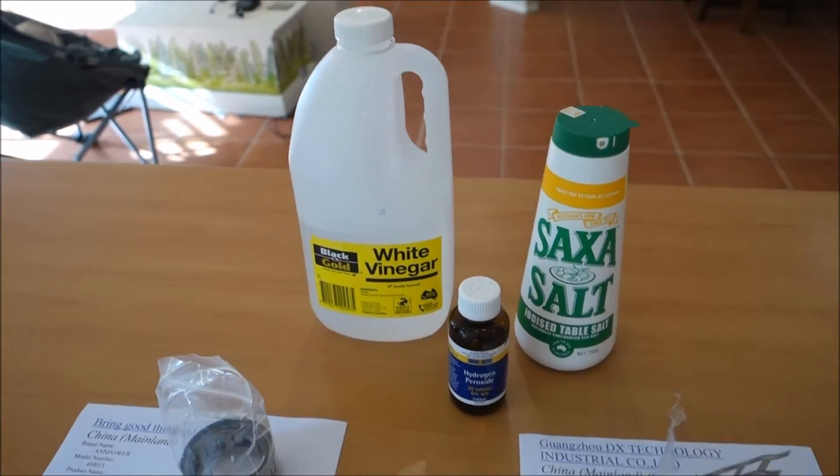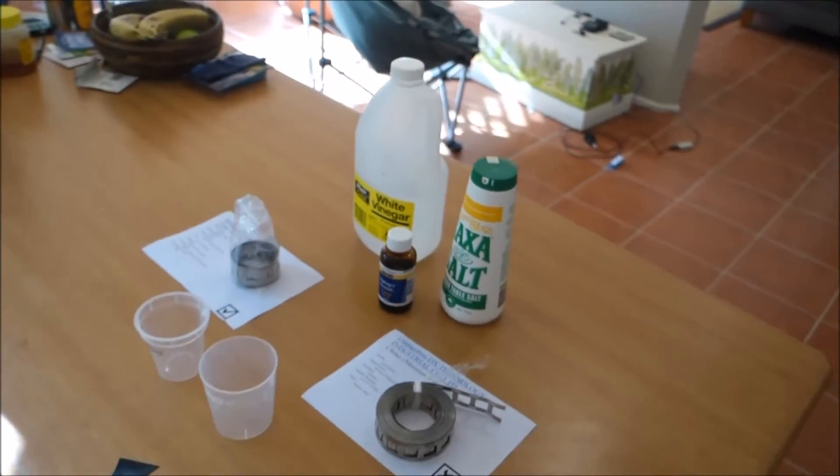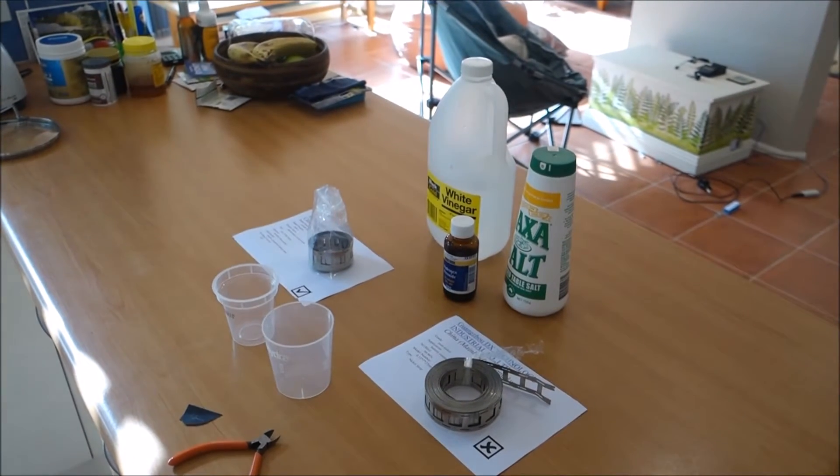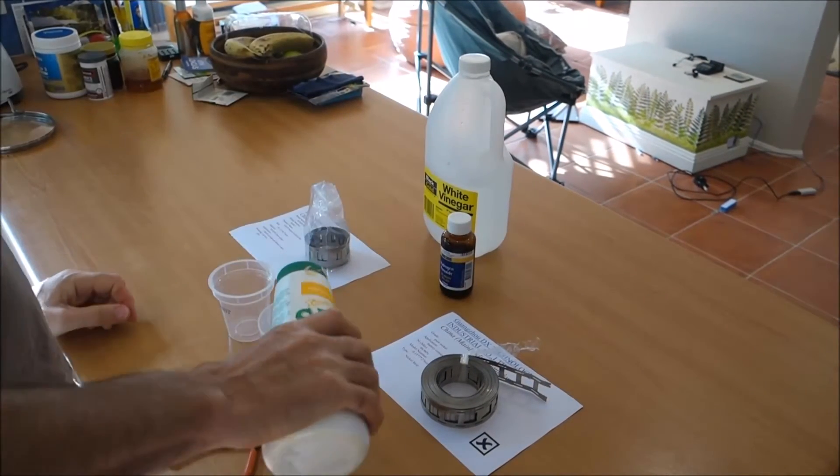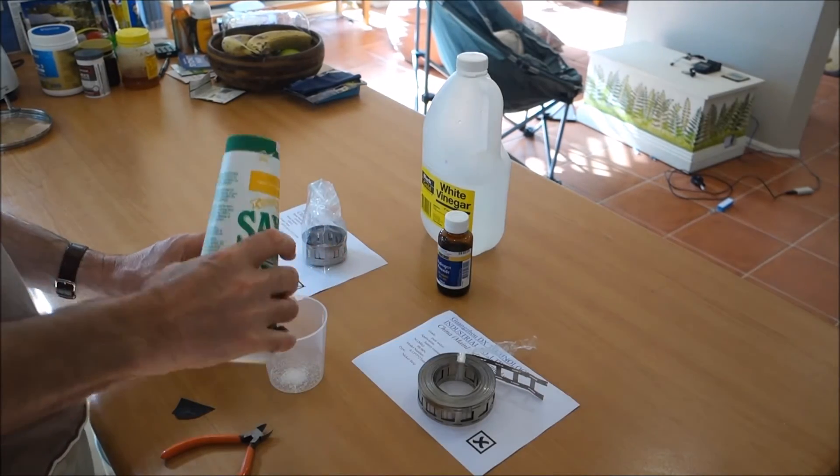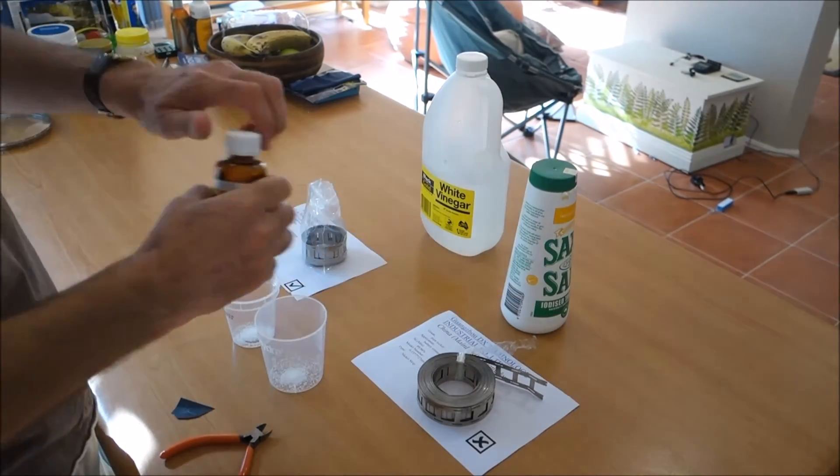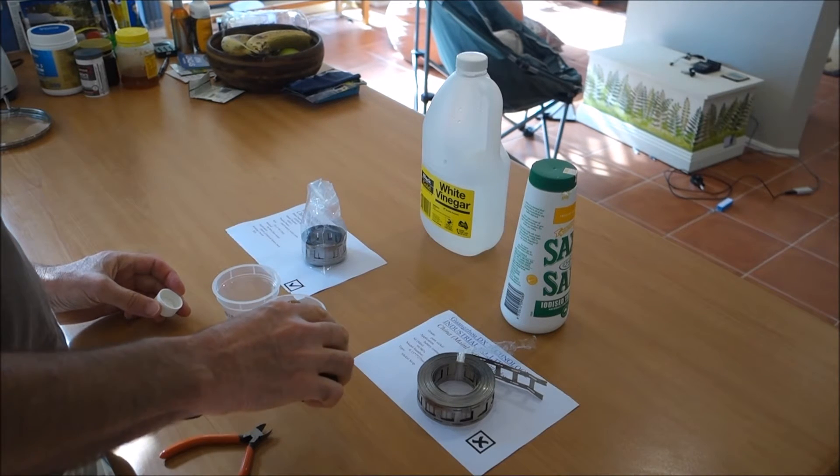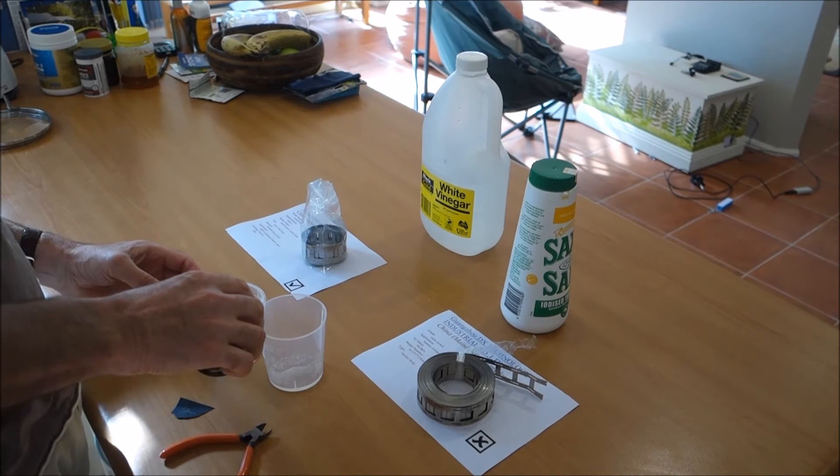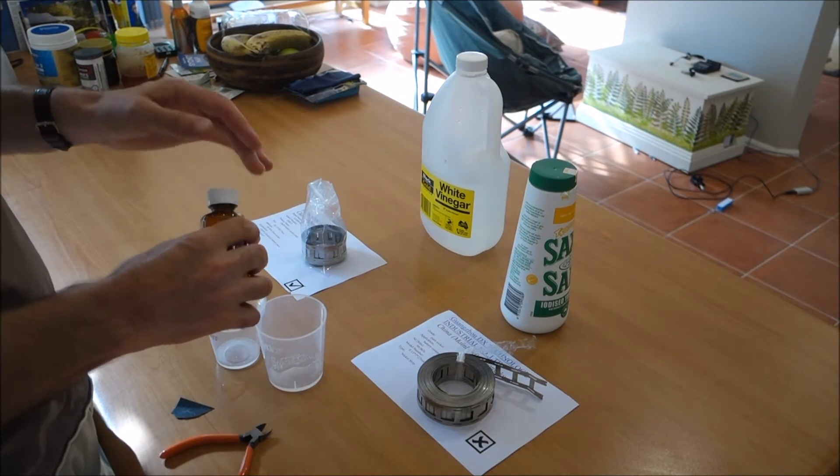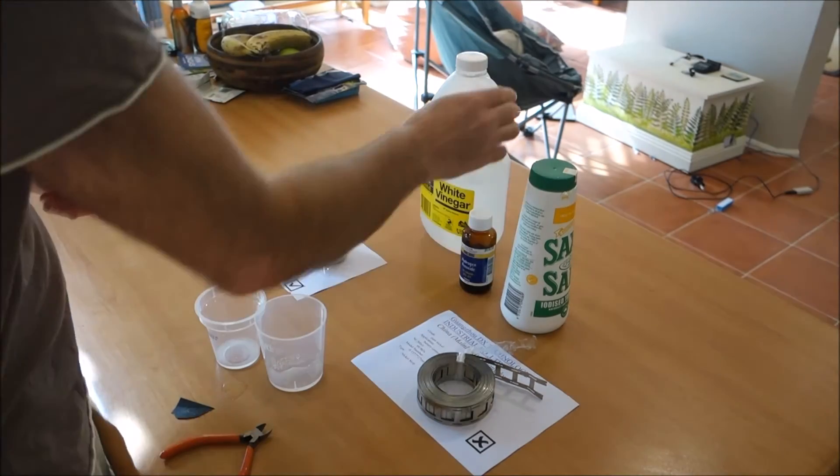Okay I'm just going to pop the camera down. I'm going to take a small amount of salt, just put it into each beaker. Hydrogen peroxide just a teaspoon or so. A little bit more. Not very accurate here. It doesn't seem to make much difference.